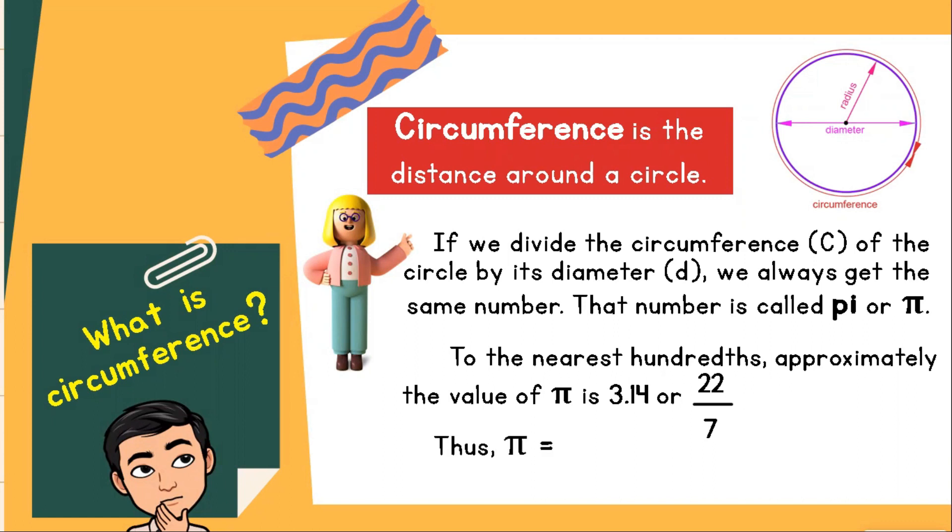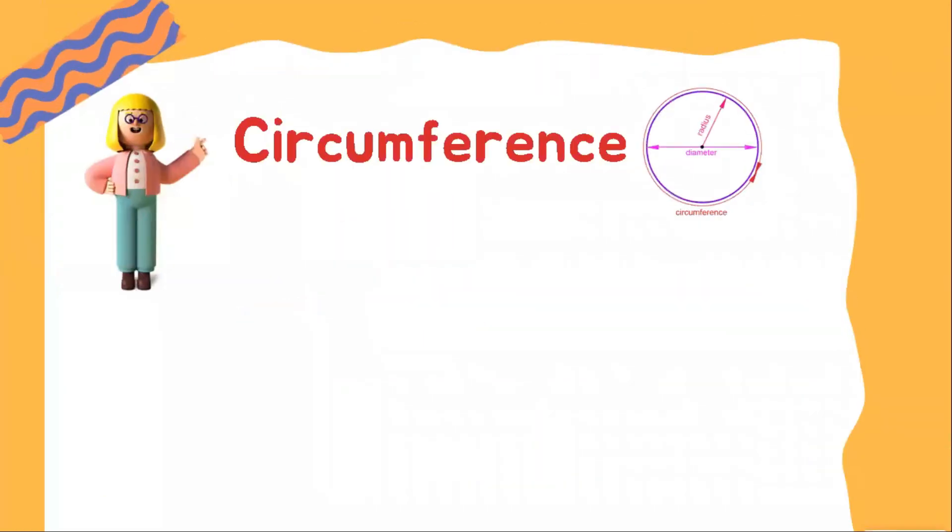Thus, the pi is equal to C over D, where C stands for the circumference, and D stands for the diameter. Next, let's come up with a formula for the circumference of a circle based on the formula that we had about pi. Circumference over diameter, or C over D, is equal to pi.